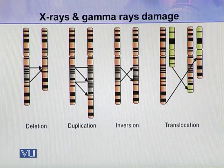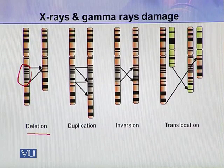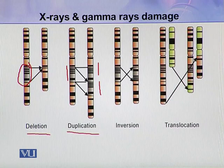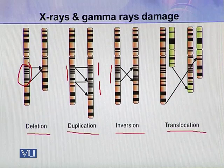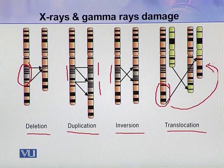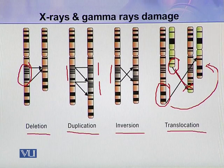In deletion, a portion of the chromosome has been deleted. In duplication, a portion of the chromosome has been duplicated, so there are two copies of that portion. In inversion, a portion of the DNA is first broken and then rejoined in the opposite sequence. In translocation, one piece of DNA is detached and attached to another chromosome — similarly, a piece from one chromosome is attached to a different chromosome.